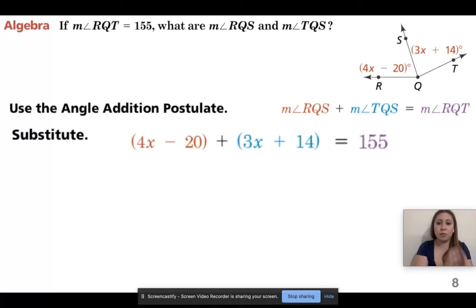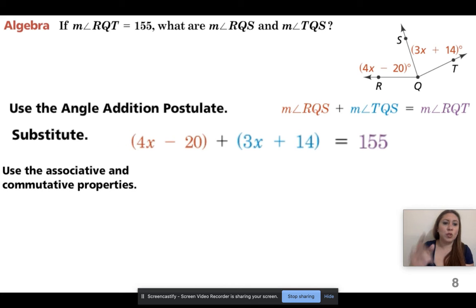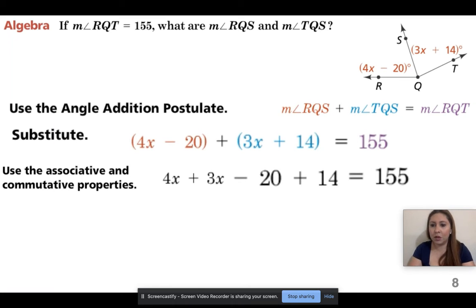So all of our like terms, we're going to add them together. So that means all the numbers that have an x go together. All the numbers that don't have an x go together, but I can't mix them together. We need to keep the people who are the same together. So use the associative and commutative properties. What are alike? Well, I have a 4x and I have a 3x. What else are the same? I have a negative 20 and a positive 14, and then the 155 stays over there.